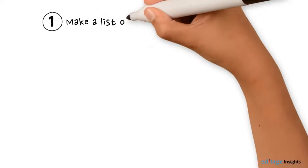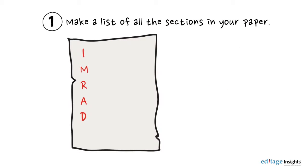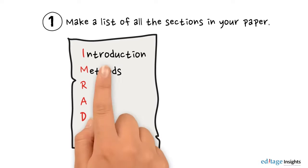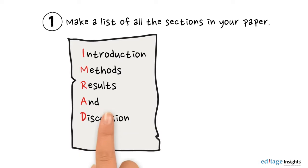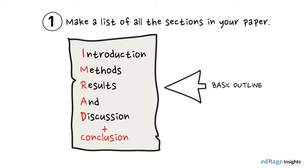First, make a list of all the sections in your paper. Your research paper should follow the IMRAD format and must include an introduction, methods, results and discussion, and conclusion. This is the basic outline for your research paper.